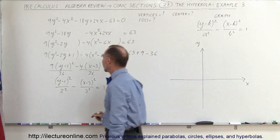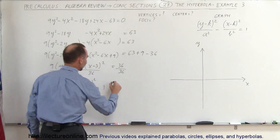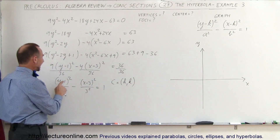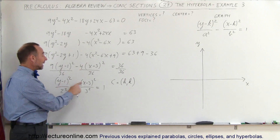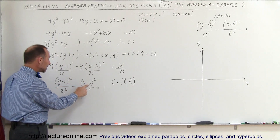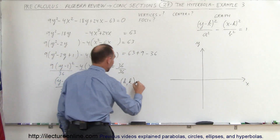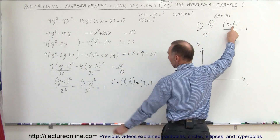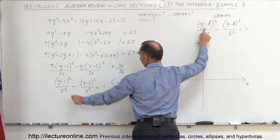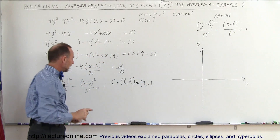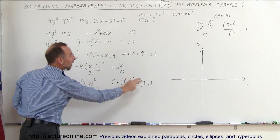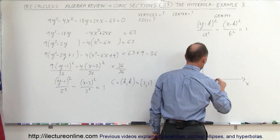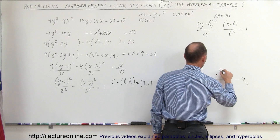The first thing we do is find the center. The center is (h, k). Be careful here: k is associated with y and h is associated with x, so the center is (3, 1), not (1, 3). In the general form, h is 3 and k is 1. When the negatives are inside, you get positive numbers for the center coordinates. So the center is at (3, 1).